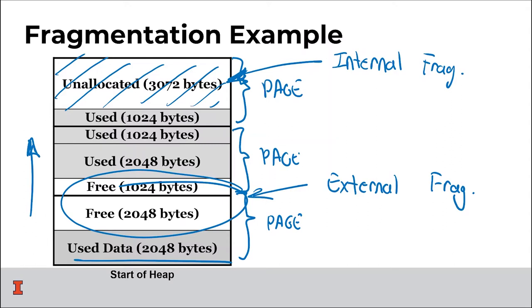As we look at a system, we can identify what memory is wasted by the design decisions we make, and based on those decisions we can identify what type of fragmentation there is and why we don't just have a continuous block of memory.